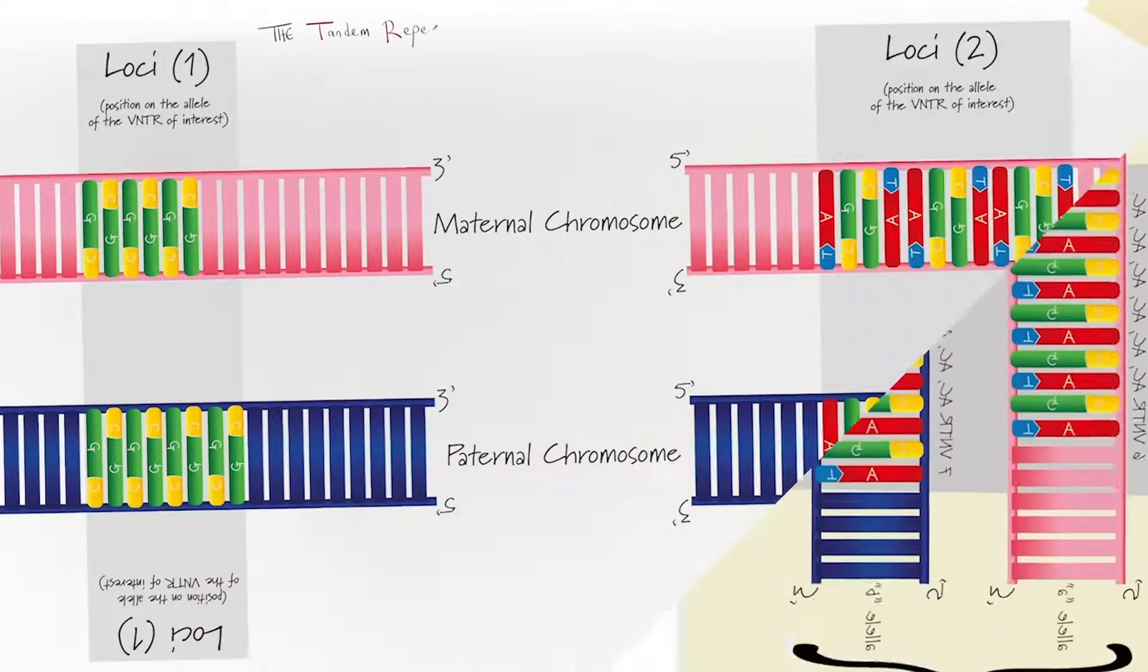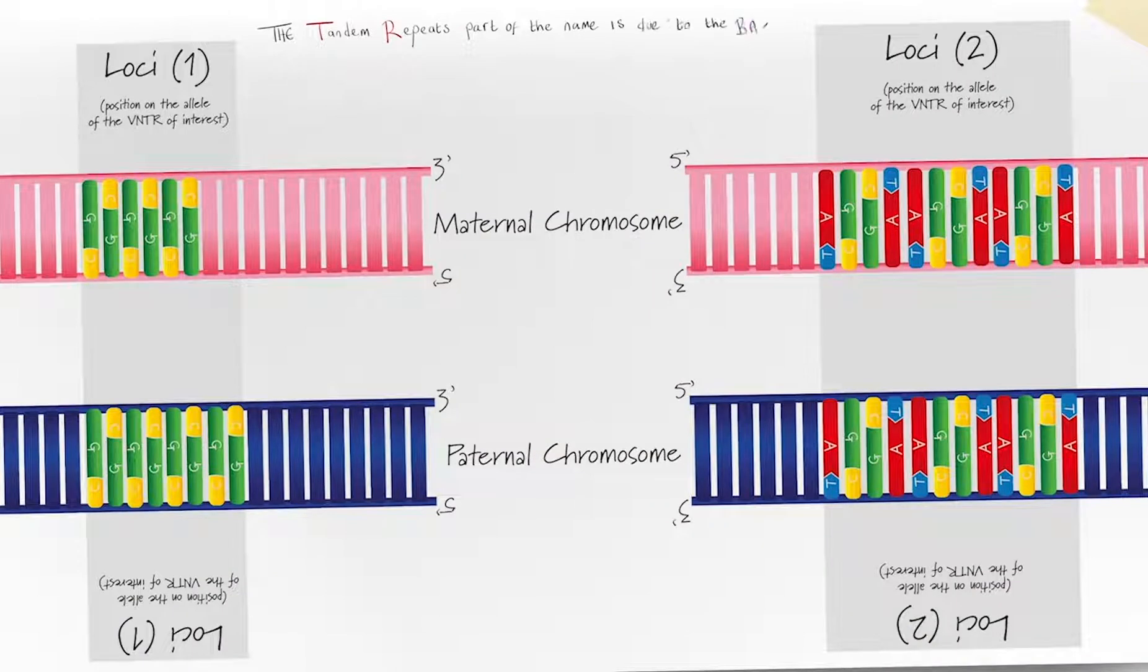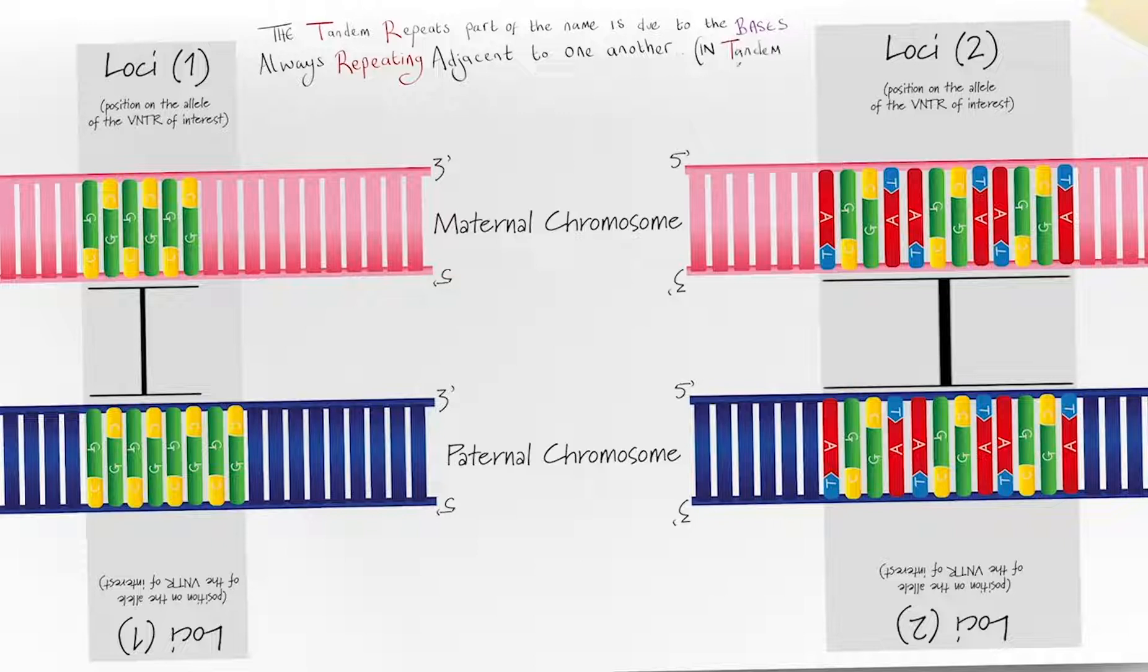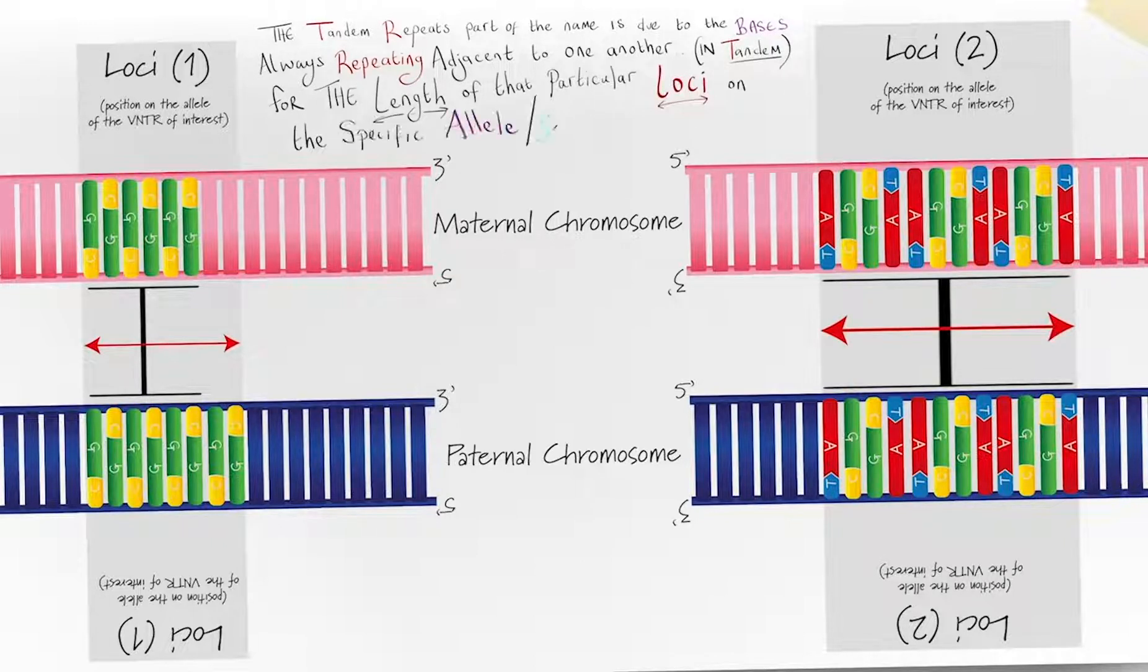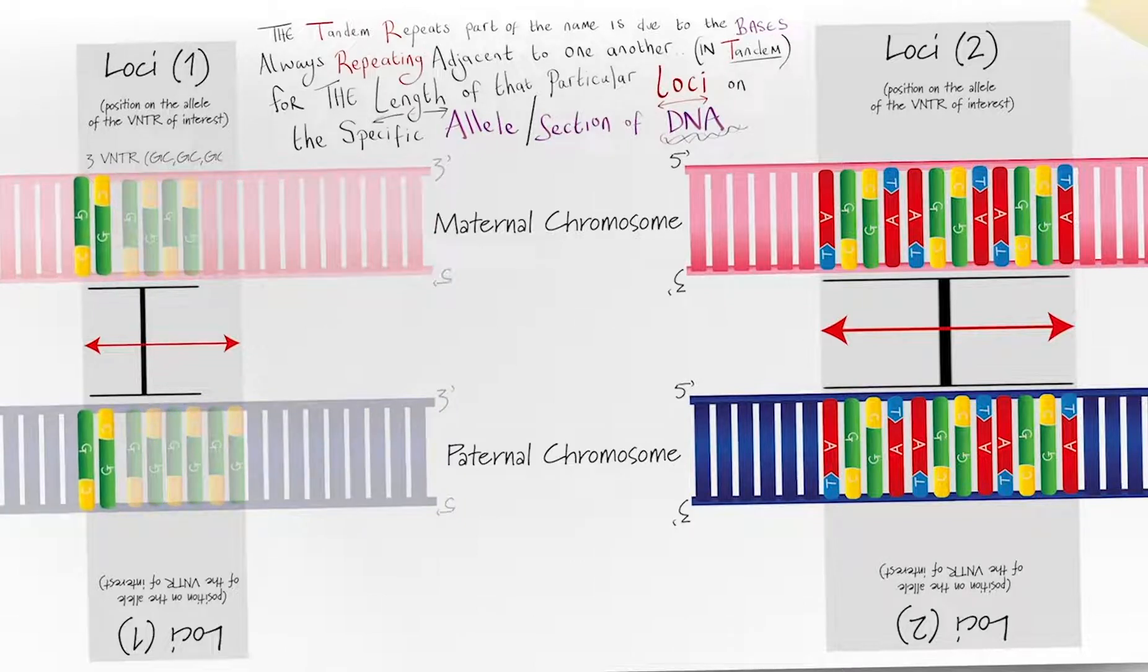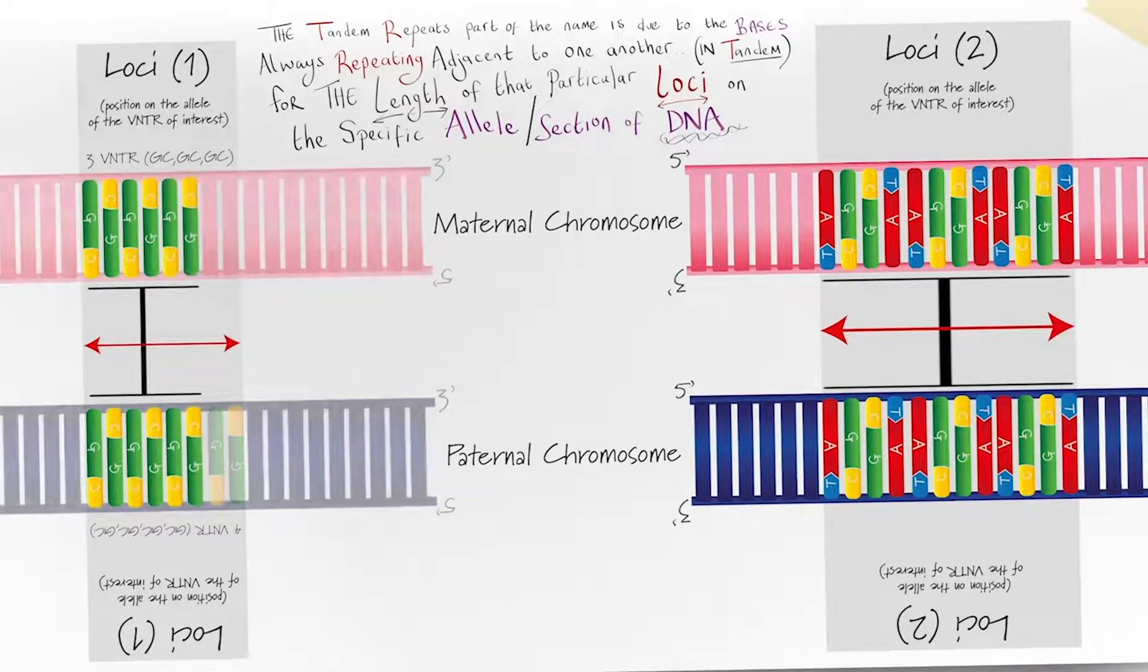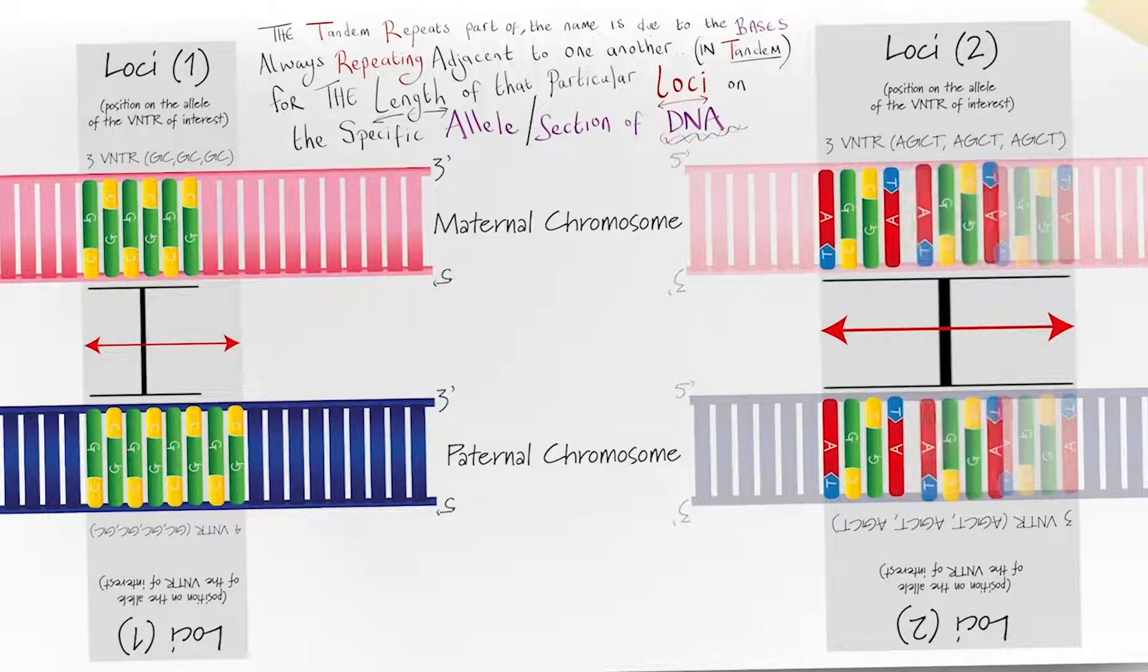The tandem repeats part of the name is due to the bases always repeating adjacent to one another, in tandem, for the length of that particular loci on the specific allele or section of DNA. For example, GC, GC, GC, or AGCT, AGCT, AGCT.